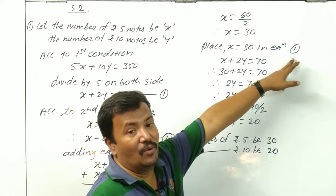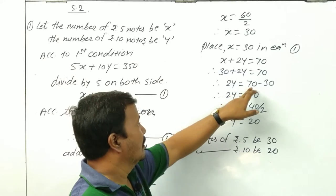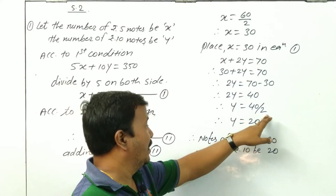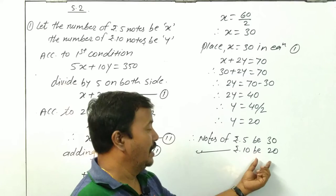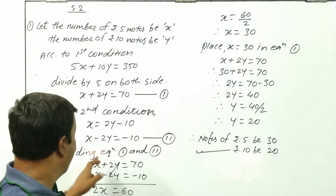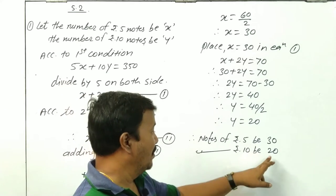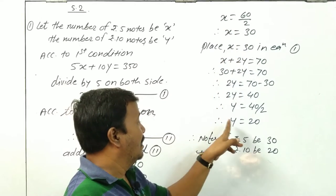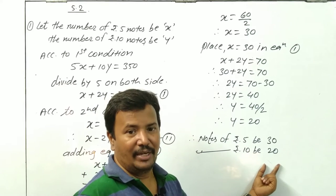Substituting x equals 30 in Equation 1: 30 plus 2y equals 70, so 2y equals 40, and y equals 20. Verification using second condition: x equals 2y minus 10 means 2 into 20 minus 10 equals 40 minus 10 equals 30. So x equals 30 is correct and y equals 20 is also correct. Therefore there are 30 notes of 5 rupees and 20 notes of 10 rupees.